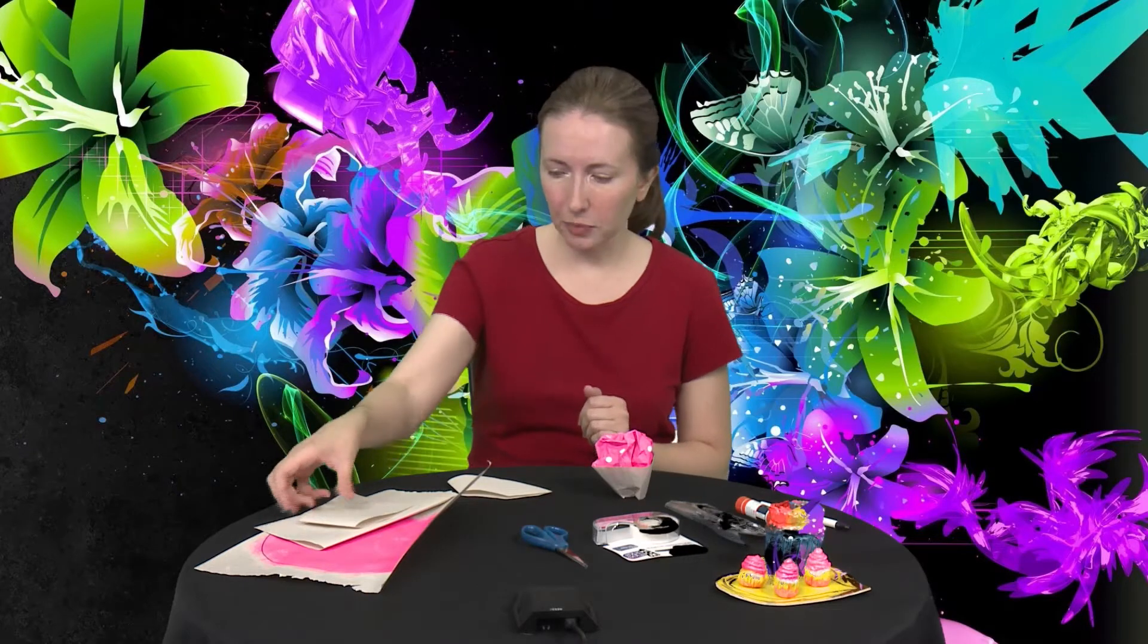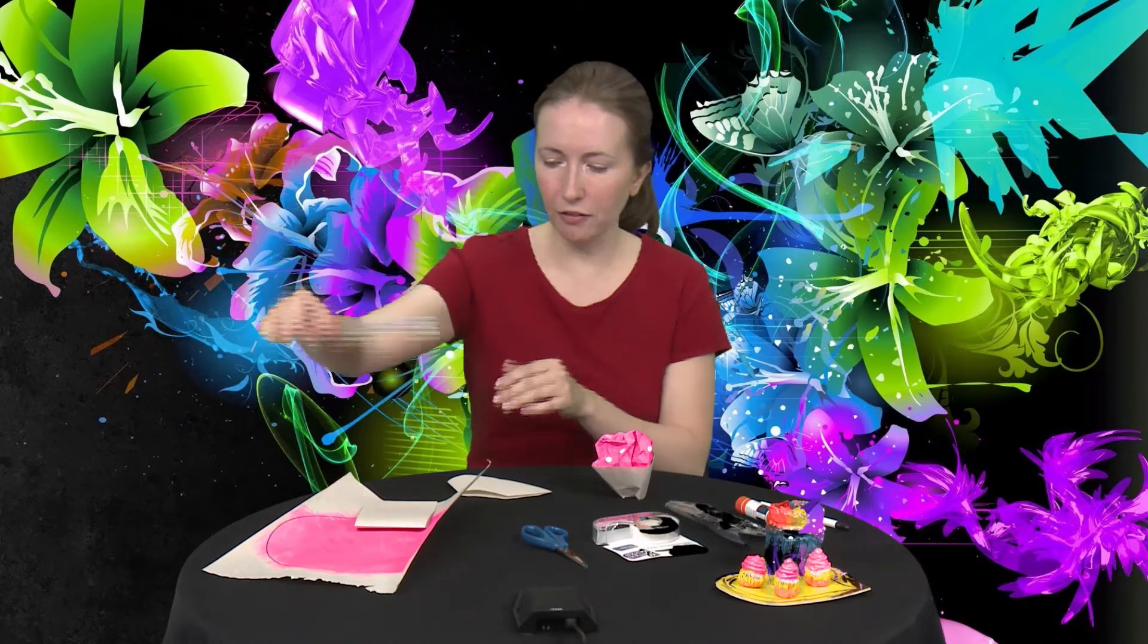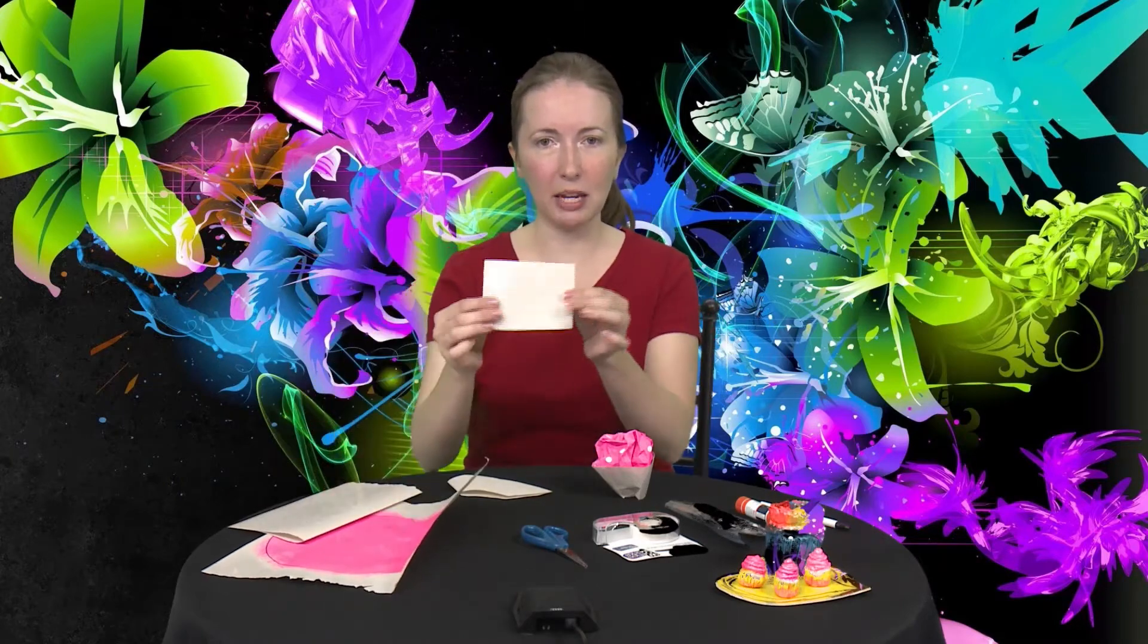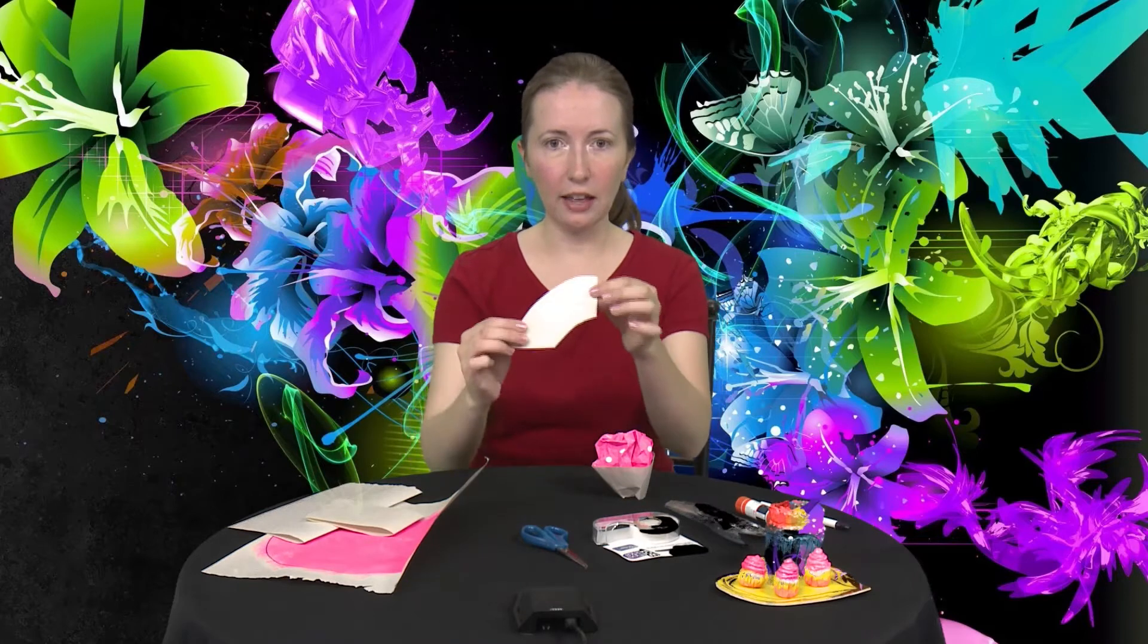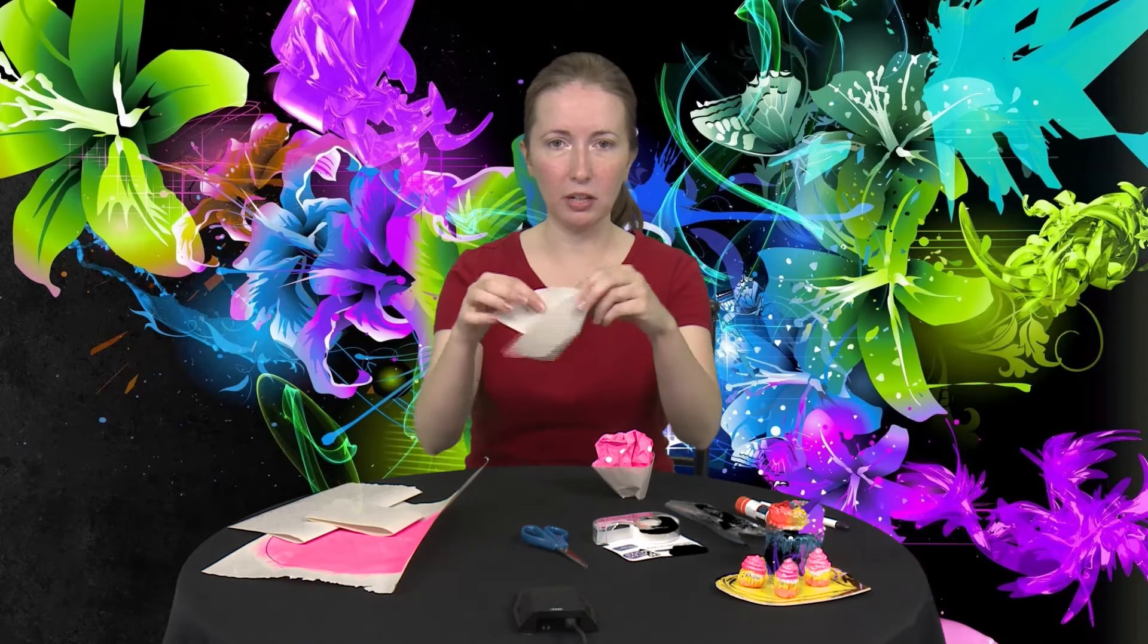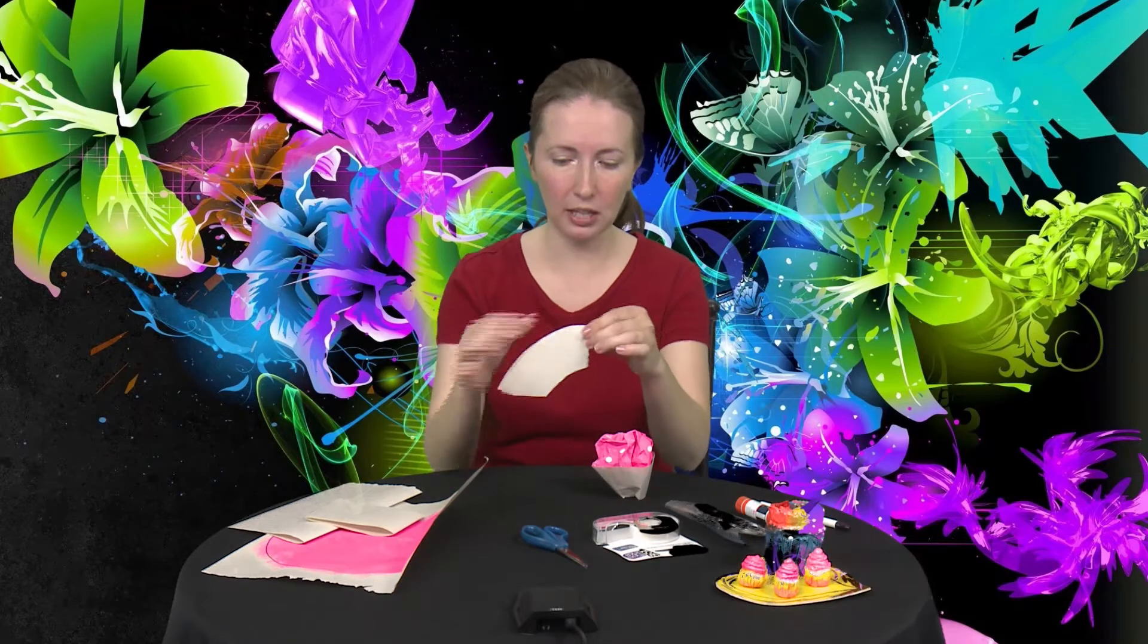So what you're going to do to start, you're going to take your paper and fold it in half. And then you're going to cut it to make about a rectangle size. And then from there, you're going to cut that and see how it's almost like half of a rainbow. Again, this is folded, that way we can make it the same on both sides.